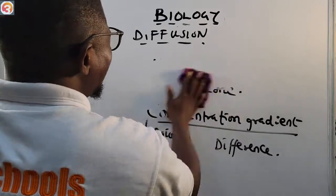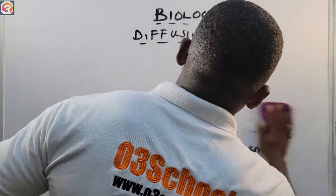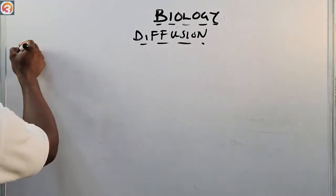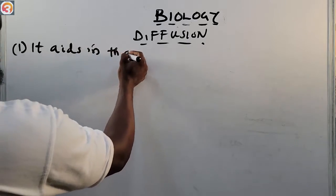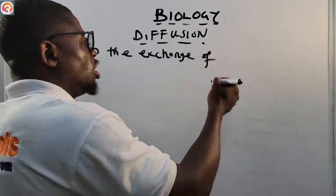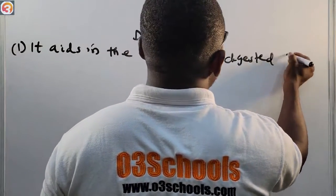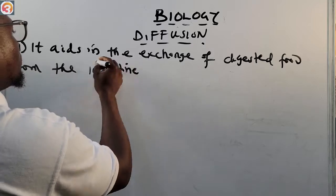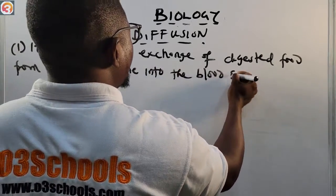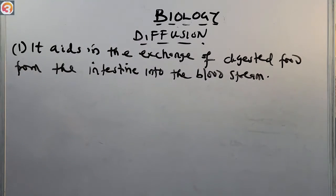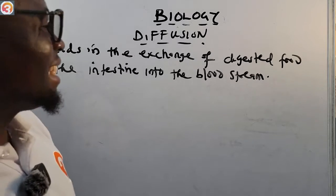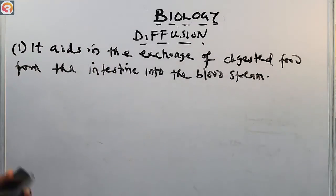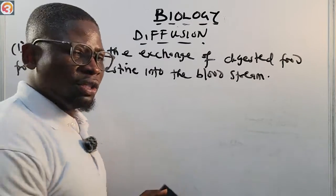Number one: diffusion helps or aids in the exchange of digested food from the intestine into the bloodstream. It aids in the movement of digested food molecules from the intestine into the bloodstream.